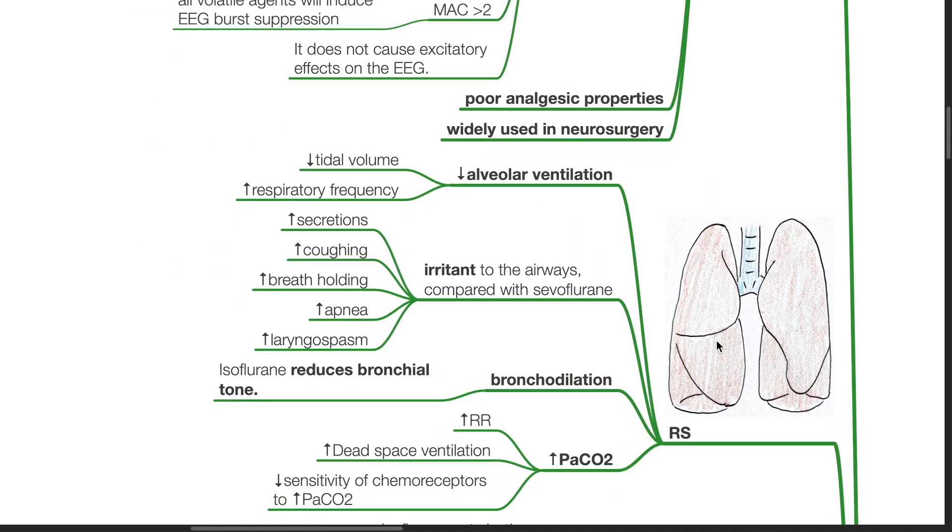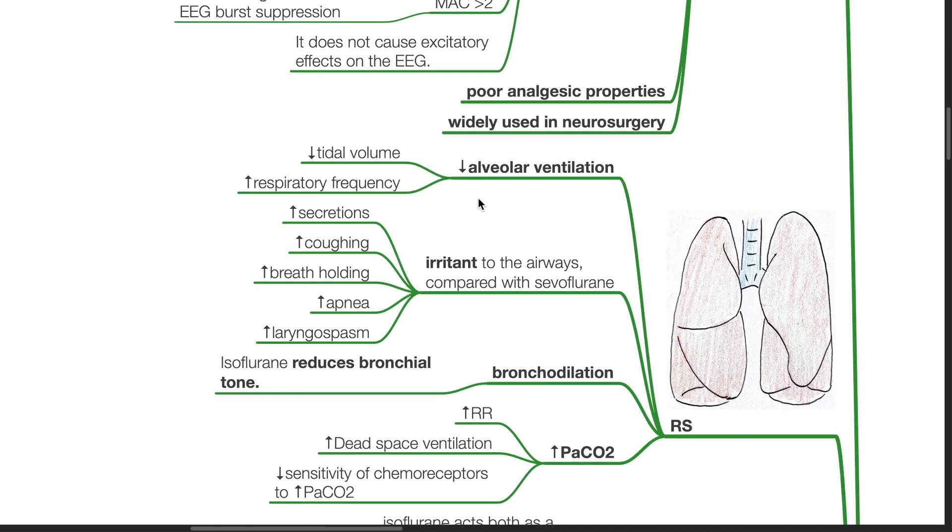Respiratory system. There is decreased alveolar ventilation, decreased tidal volume and increased respiratory frequency. Isoflurane is irritant to the airways compared with sevoflurane. There is increased secretions, coughing, breath-holding, apnea and laryngospasm.